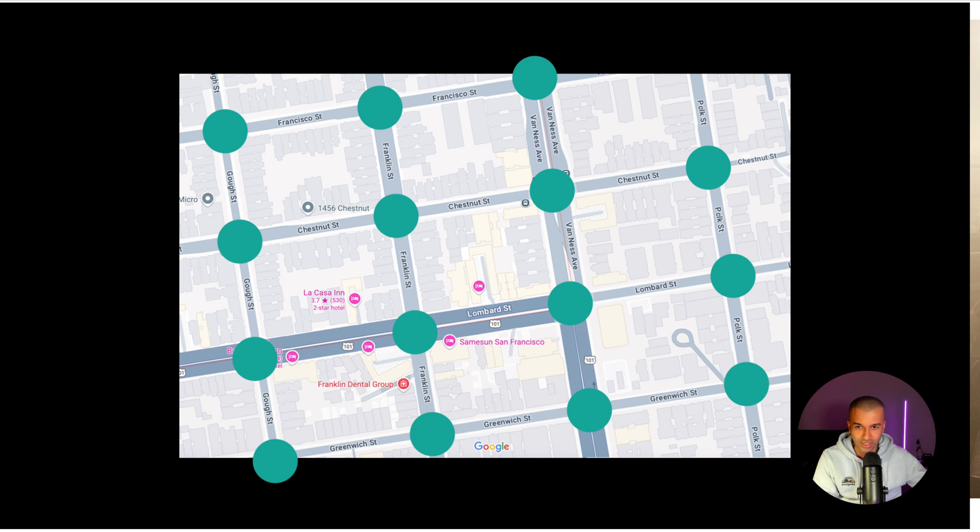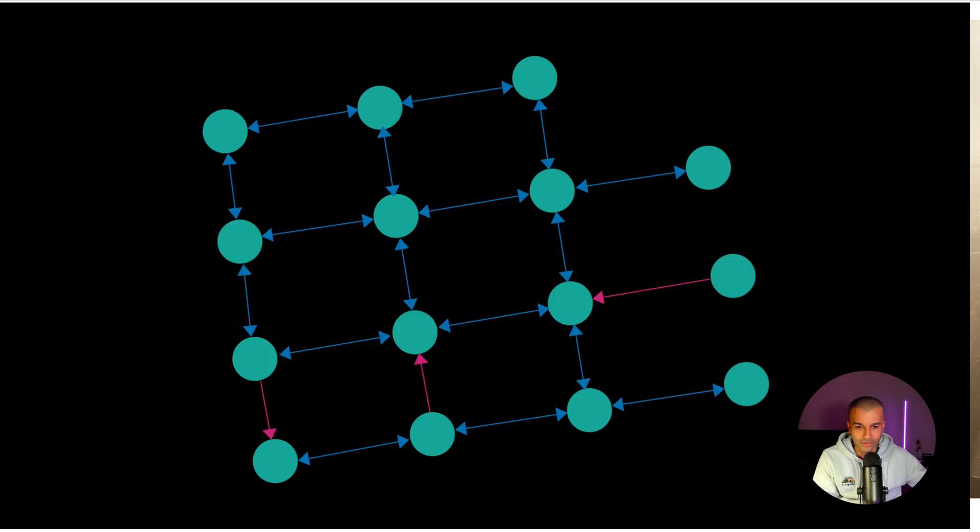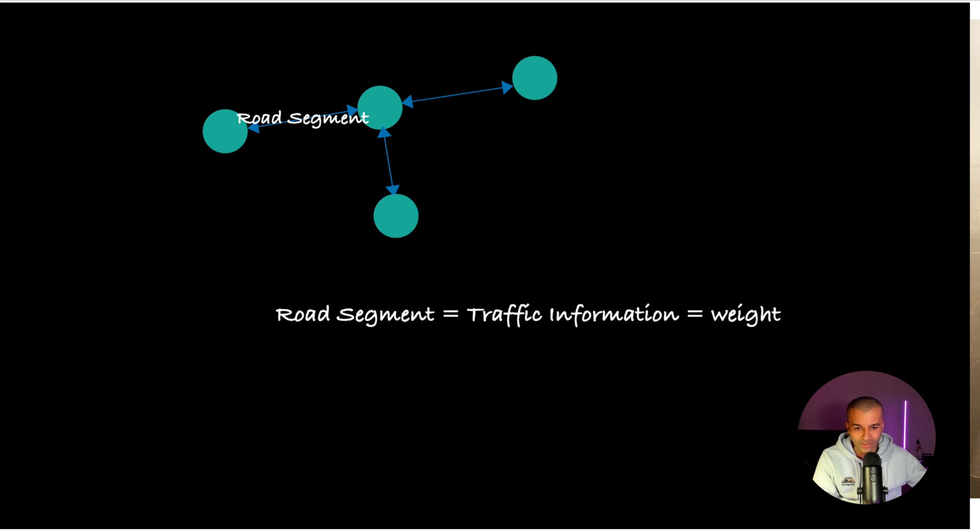The nodes represent street intersections. Every street that you see here is the edge. This looks already a lot familiar to what we see on LeetCode. This is a directed graph where the nodes are the road intersections and the edges are called road segments. The road segment contains a weight to it, and this weight is the traffic information.